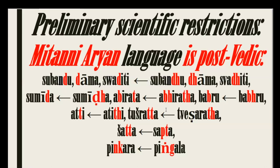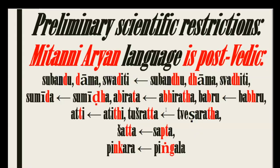For example, we have 'Subandhu' in Mitanni Aryan language, which corresponds to 'Subandhu' in the Rig Vedic and Atharva Vedic language. The phonetics of the Rig Veda and the Atharva Veda is the same, even including Brahmanas, Aranyakas, and Upanishads. We know for sure that the Rig Vedic and Atharva Vedic language was colloquial — freely spoken — and that's why we may be sure that their phonetics is earlier than that of the Mitanni Aryan language. So 'Dhamma' in Mitanni Aryan was 'Dha' in the Rig Veda.